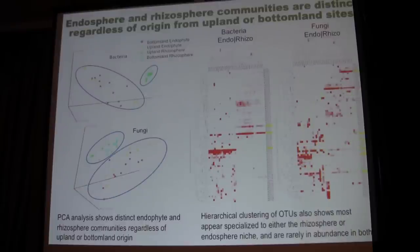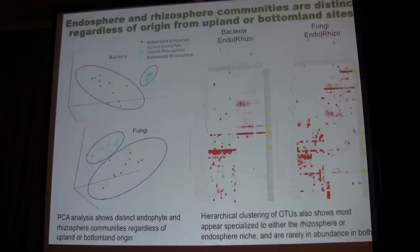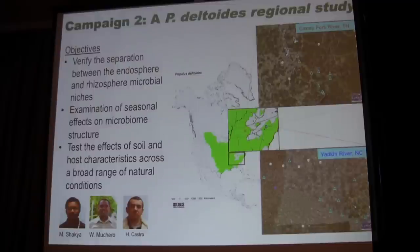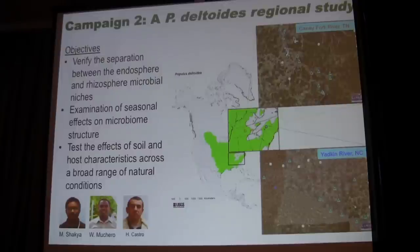An approach we take in a lot of our studies is doing everything in parallel with bacteria and fungi, trying to look at some of the total communities. In Populus deltoides, after that first study, we had some remaining questions. We had only looked at two soil types and wanted to understand how variable these communities were across a broader set of conditions. So in the next year, we took on a larger-scale study where we looked at two different watersheds in Tennessee and North Carolina.